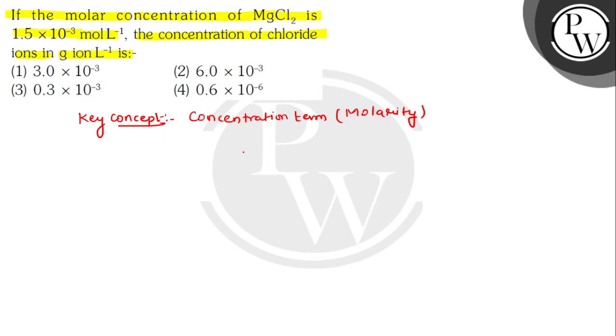We have a strong electrolyte. A strong electrolyte will completely dissociate into its constituent ions, which is Mg^2+ plus 2Cl^-.